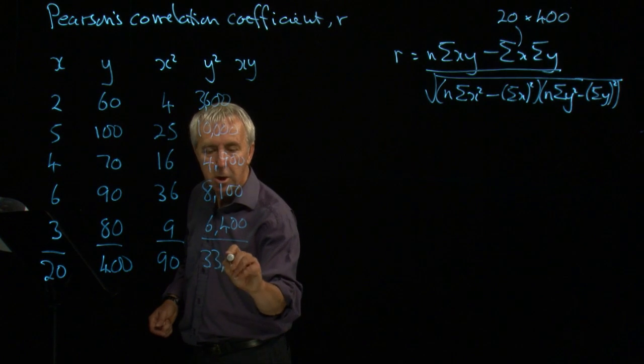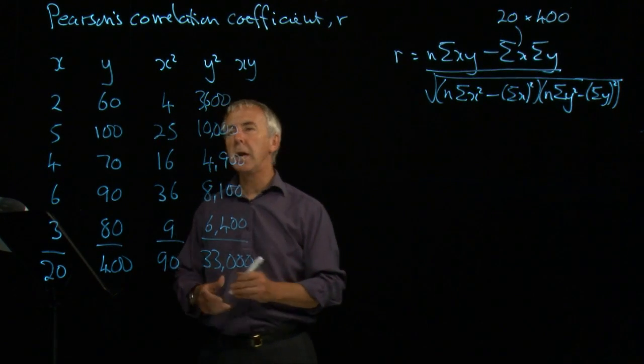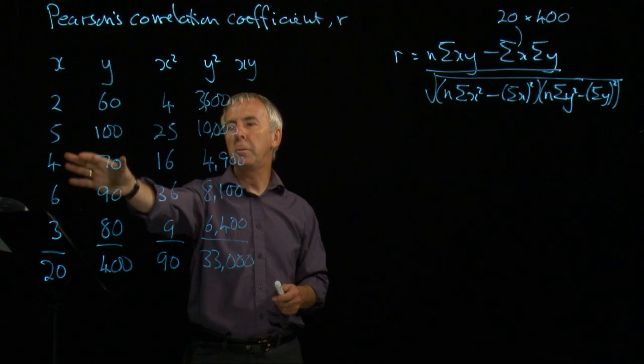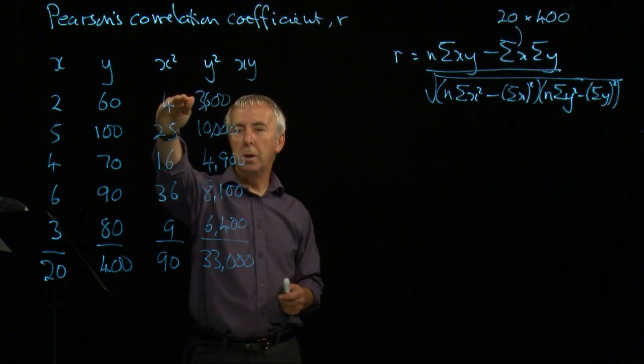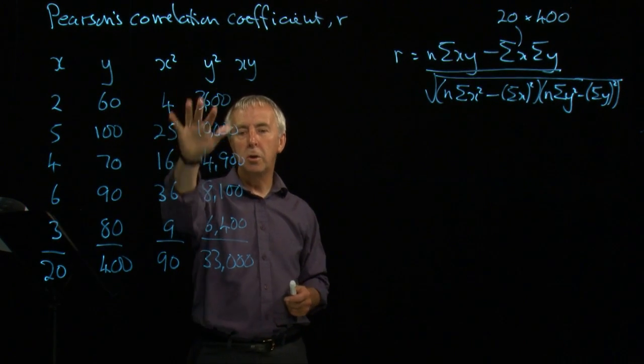This is very easy to do on a spreadsheet. If you put your data in the first two columns, A and B, you can put a formula in for each of these and just click and drag, and it will do it very quickly.